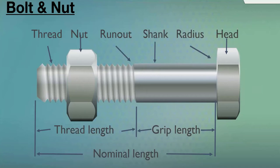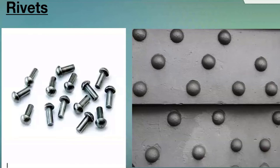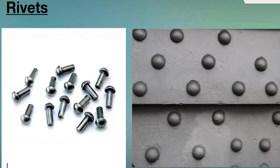This image shows a rivet. Rivet connections were very famous during the mechanization era — the early 1900s when the modern industrial era started. Most structural steel work at that time used rivet connections. The main drawback is that while installation is easy, any repairs, rehabilitation, or removal of a member from the connection is very tedious, and rivets may fail easily. That is why riveted connections have now become obsolete.